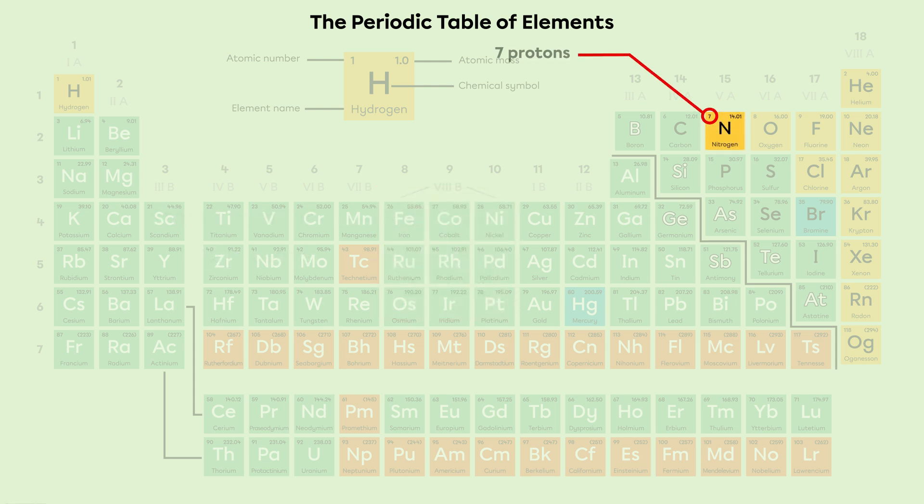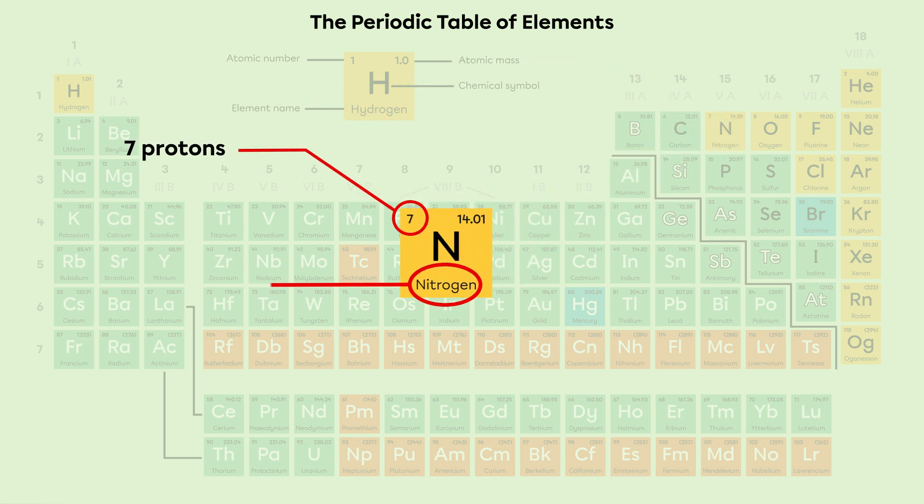Likewise, an atom that has 7 protons is represented by atomic number 7. It's always nitrogen.